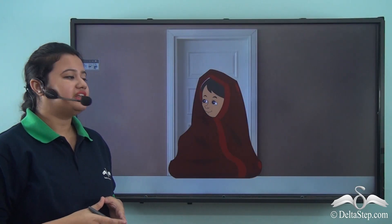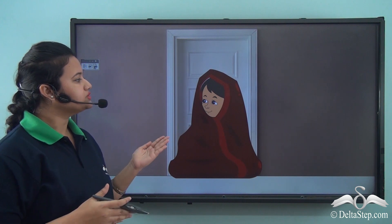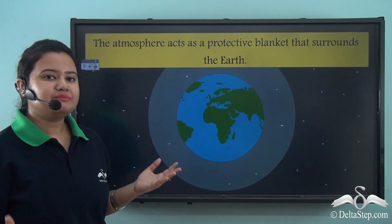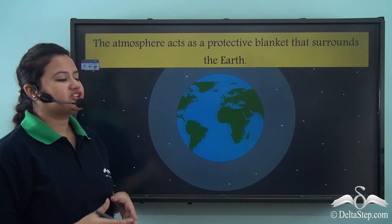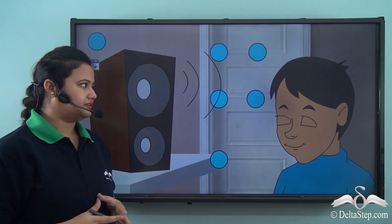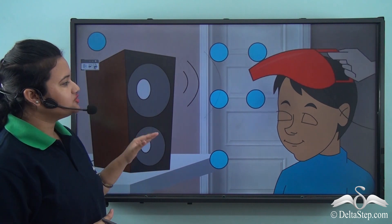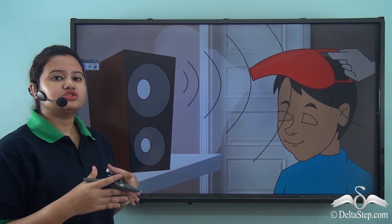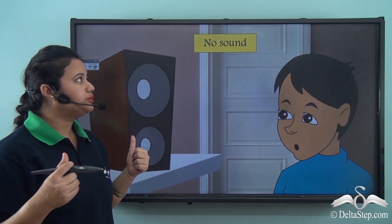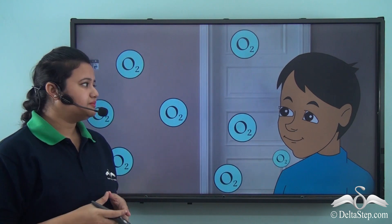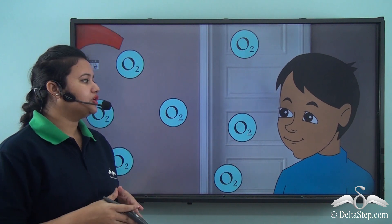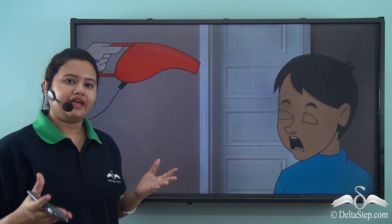Imagine yourself in a warm cozy blanket during a cold winter night. Similarly, the atmosphere is just like that blanket protecting our Earth. Now imagine that there is no atmosphere — it means that there is no air. So we will not be able to hear anything, and we will not be able to breathe because there is no oxygen or air.